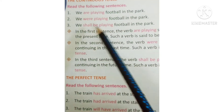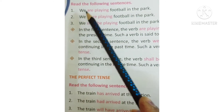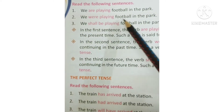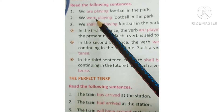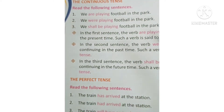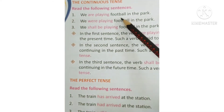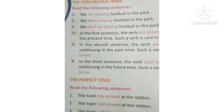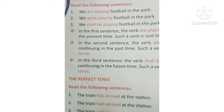Now see this: The continuous tense. Read the following sentences: We are playing football in the park. We were playing football in the park. We shall be playing football in the park. In the first sentence, 'are playing' shows that an action is continuing at the present time. Matlab is waqt hum football khel rahe hain park mein, aur woh kaam jo hai woh continuation mein hai — woh chal rahi hai abhi bhi.